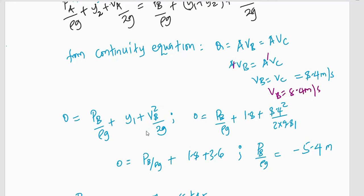So, if we substitute it in our equation above, it means 0 is equal to P_B out of rho G plus Y_1 plus V_B squared out of 2G, which is equal to 0 is equal to P_B out of rho G plus 1.8 plus 8.4 squared out of 2 times 9.81. And, this would give us negative 5.4 as P_B out of rho G.